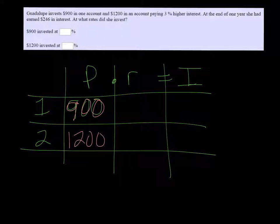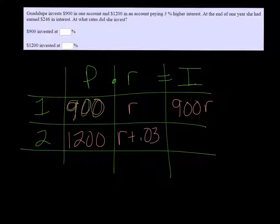The rate for one, we don't know. But the other one was 3% higher. So we'll let one R be R, and the other one will be R plus 0.03. If we multiply those together, we get the interest. So $900R and $1,200 times R plus 0.03.